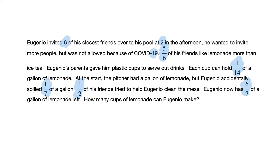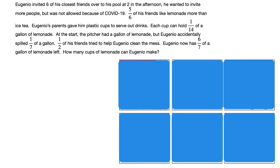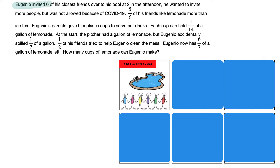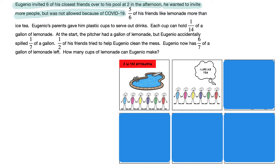So now it's our job to figure out what is really happening in this word problem, what are the key information pieces that we need, and what do we not need. In order to solve a word problem, it really helps if we understand all of the events taking place. First, Eugenio is inviting six of his closest friends over to his pool at two in the afternoon, but he was not allowed to invite more because of COVID-19. The next sentence says five-sixths of his friends like lemonade more than iced tea. So if we have six friends and five-sixths like lemonade, that means one friend likes iced tea and five friends like lemonade.